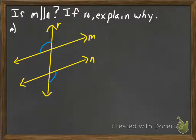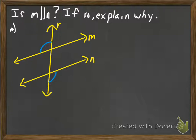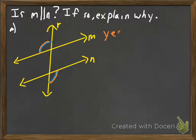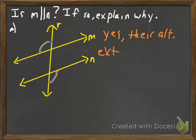Let's practice proving two lines are parallel. We're going to determine if line M is parallel to line N, and if so, explain why using a theorem. In this picture, the two marked angles are congruent — those are alternate exterior angles. Since we can show the alternate exterior angles are congruent, the answer is yes, the lines are parallel. The reason is that their alternate exterior angles are congruent.